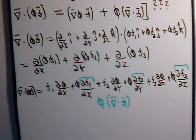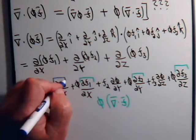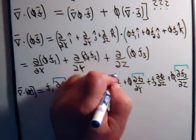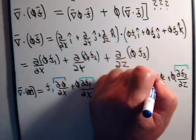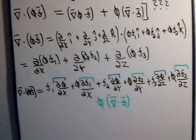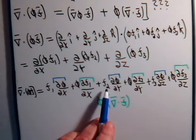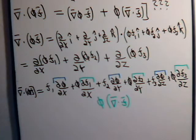Now what about these other terms? Here we have the partial of phi with respect to x, the partial of phi with respect to y, and the partial of phi with respect to z. But this is multiplied by f1, this is multiplied by f2, and this is multiplied by f3. So how could we obtain those terms?